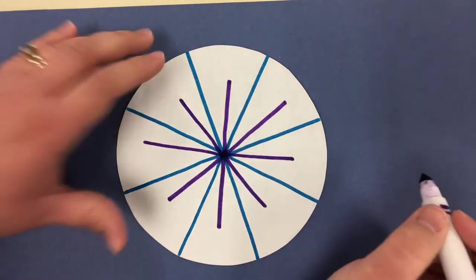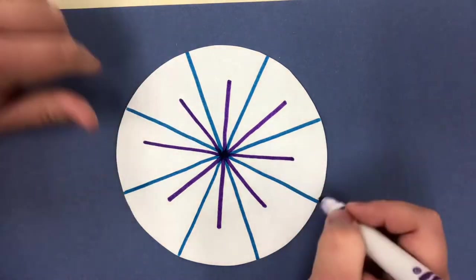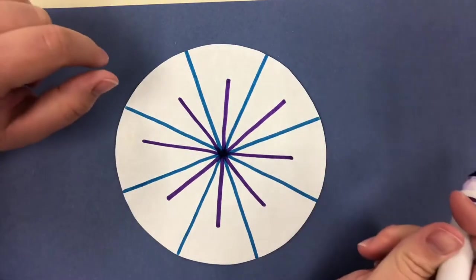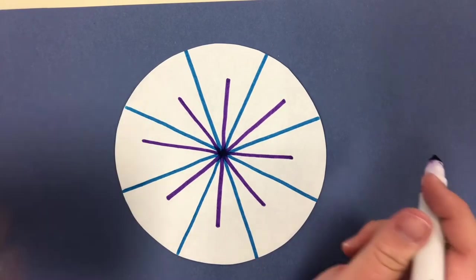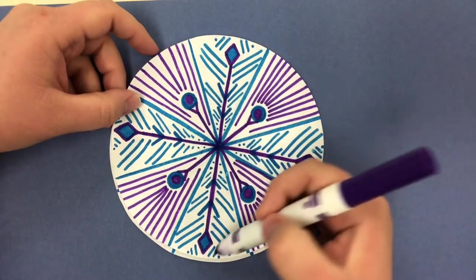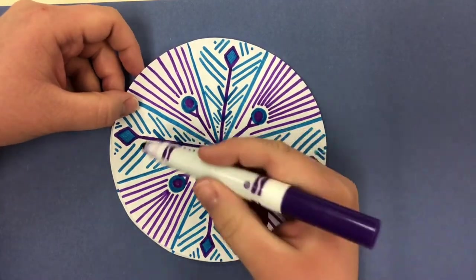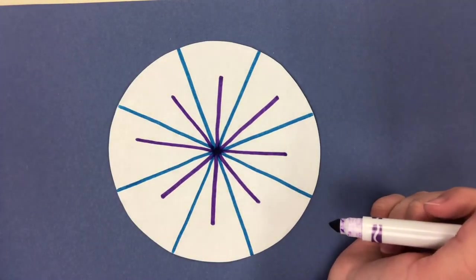Now this is the fun part. After you kind of get the basic shape of the snowflake of the circle and then the starburst where we're tracing the triangles and then the starburst from the center, this is when you can add your own designs. In this one, I added triangles on the end of each of the lines, on four of the lines and circles on the other four lines.